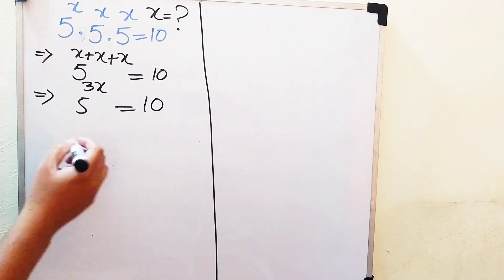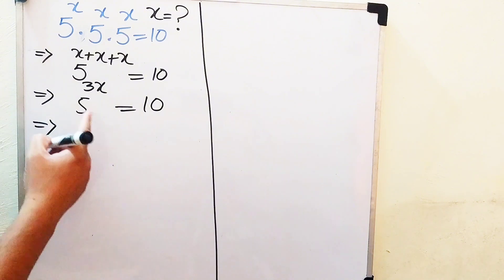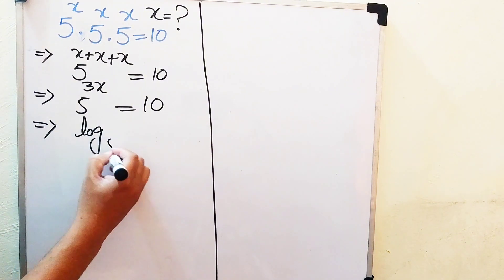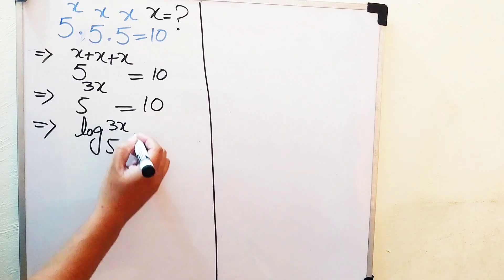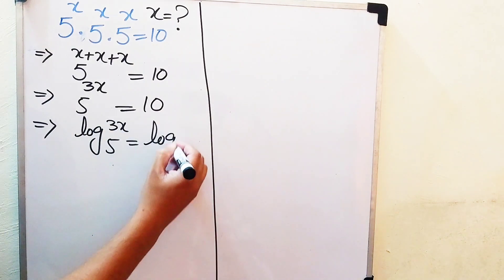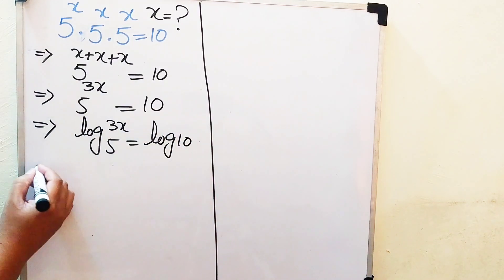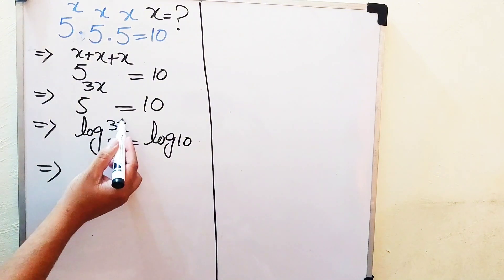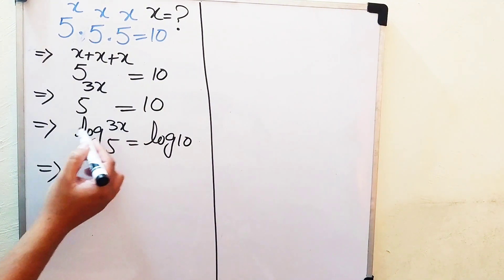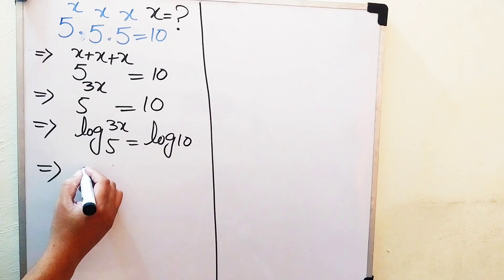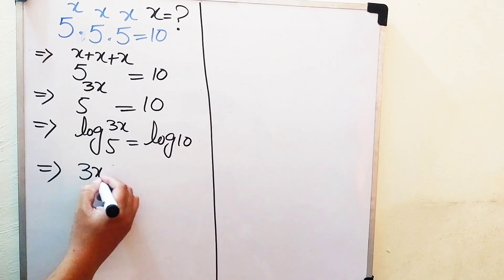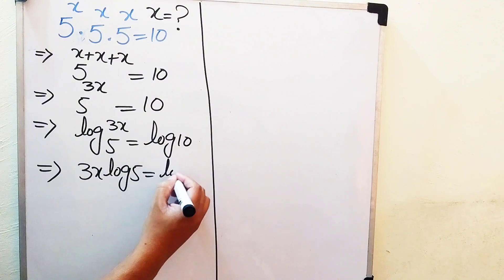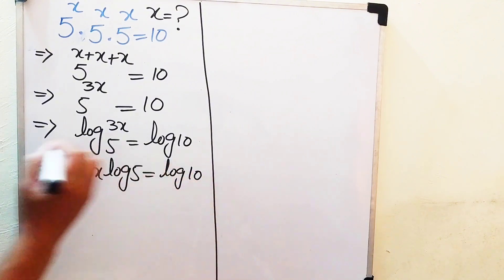Now, in order to find the value of x, we need to take the log on both sides. So we take log on both sides, and in the next step we use the property of logarithms and move the exponent 3x to the front, giving us 3x times log 5 equals log of 10.